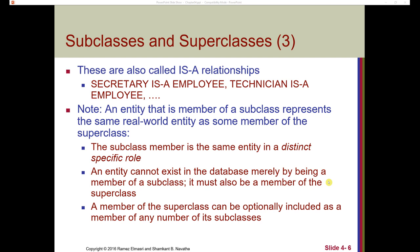This we can also refer to as an 'is-a' relationship — a secretary is an employee, a technician is an employee. An entity that is a member of a subclass represents the same real-world entity as some member of the superclass. For example, we might have a superclass of animal with different animal IDs tracked at the zoo, and then subclasses like snake or lion, each with separate attributes but also inheriting a primary key of animal ID from the corresponding superclass.